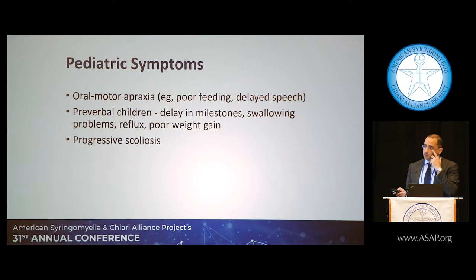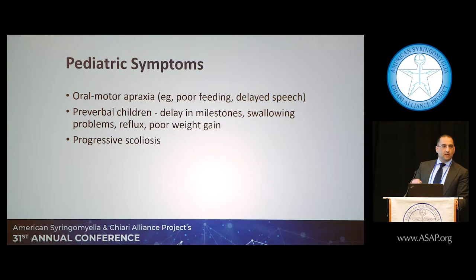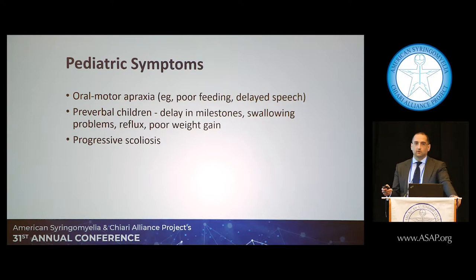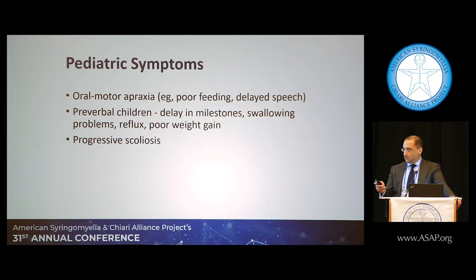Scoliosis — the S-shaped curvature of the spine — is a common finding in kids with Chiari. These kids may have a mild curve that progressively worsens as they grow. A spine surgeon dealing with a worsening curve will order appropriate imaging of the brain and spinal cord, and find a Chiari malformation.